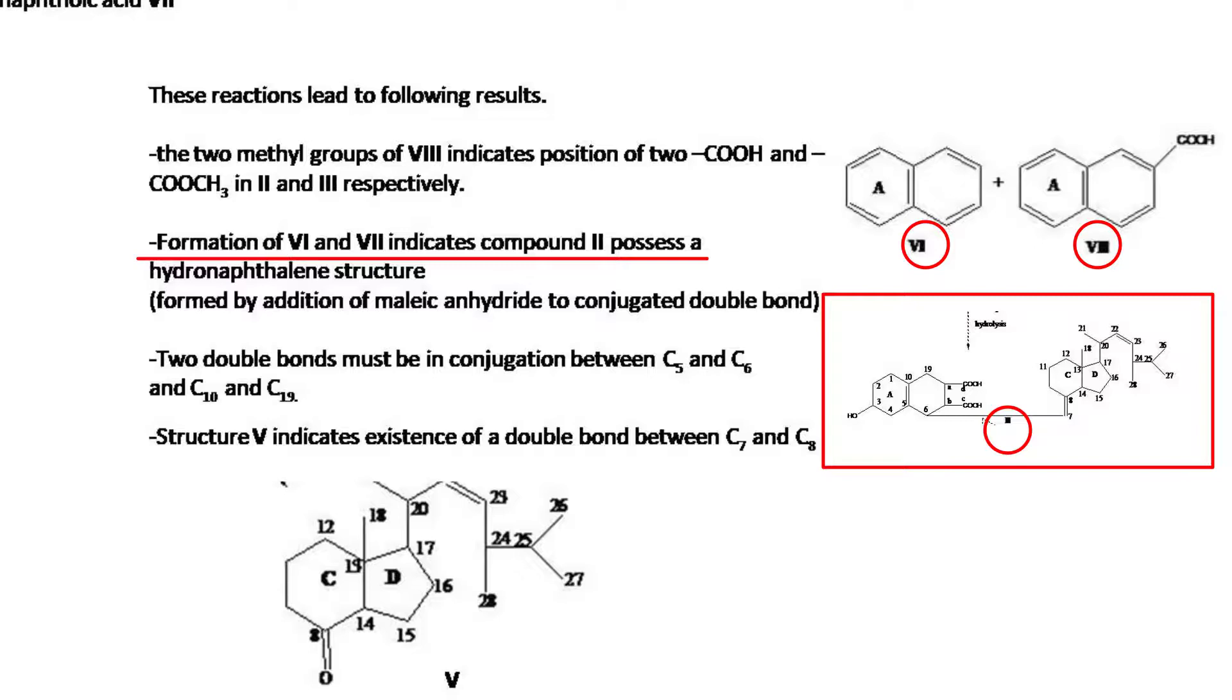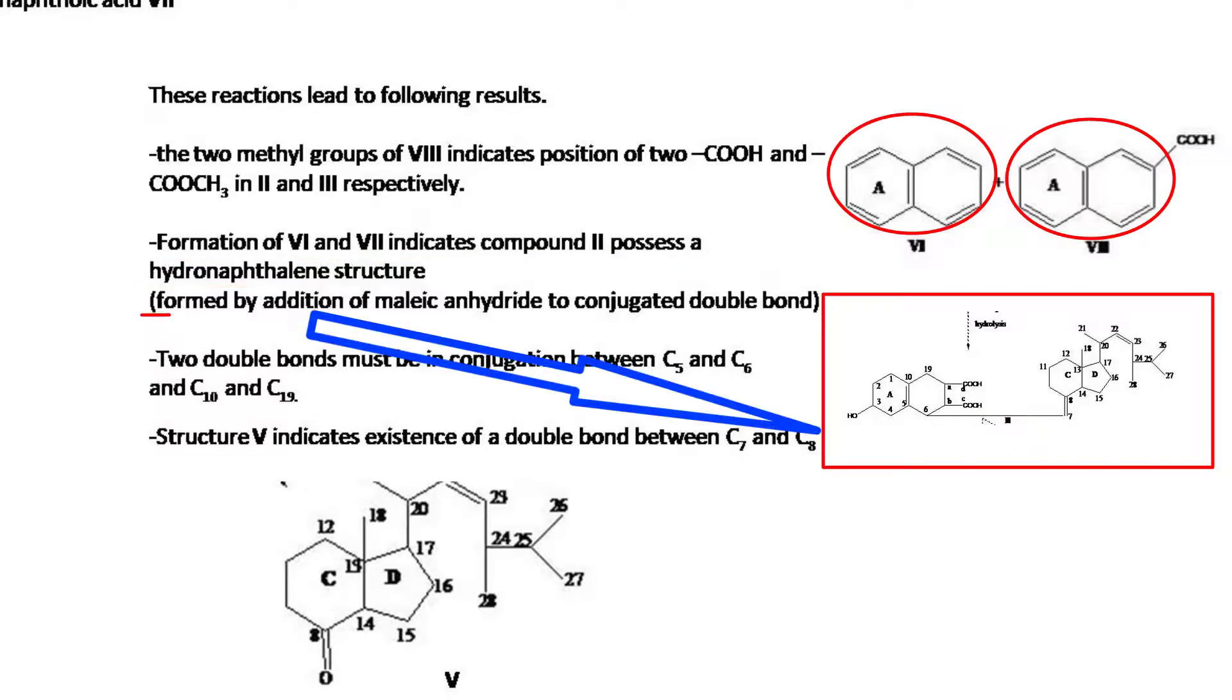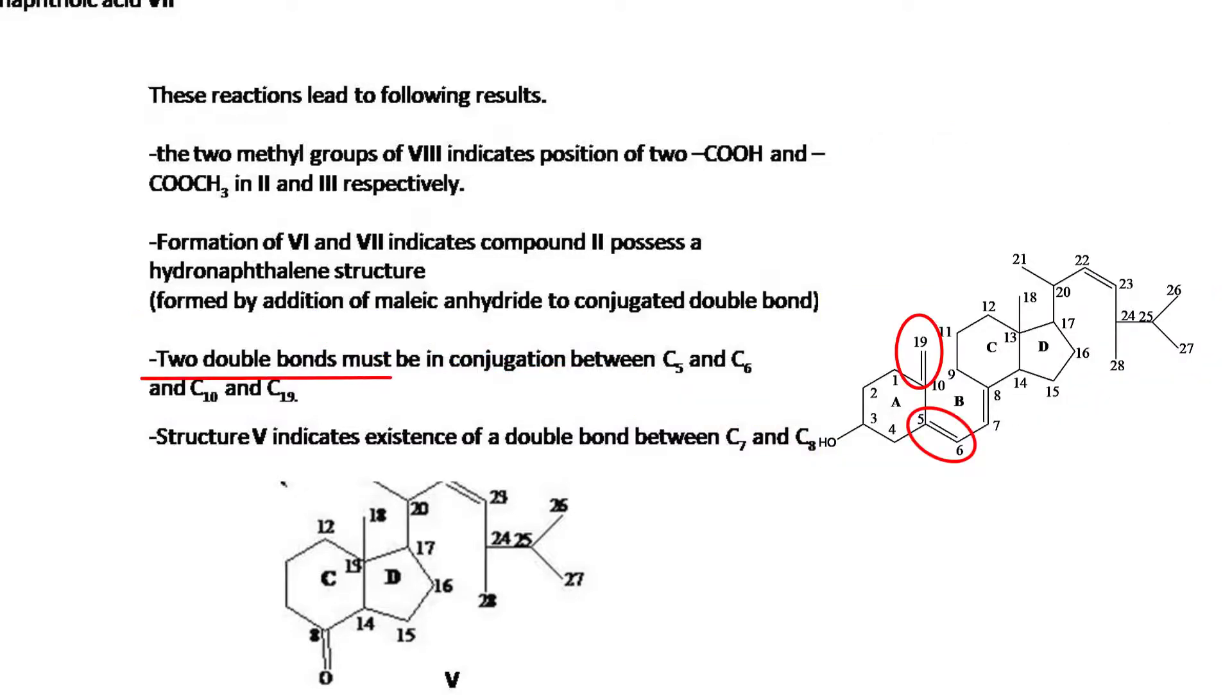Formation of sixth and seventh indicates compound second possesses a hydronaphthalene structure formed by addition of maleic anhydride to conjugated double bonds. Two double bonds must be in conjugation between C5 and C6, and C10 and C19. The structure fifth indicates existence of a double bond between C7 and C8.